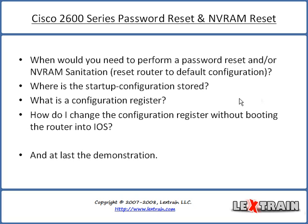I've created four key points that I want to discuss in this video: when you'll be required to perform a passive reset or a non-volatile RAM sanitation — which is basically resetting the router back to factory defaults as if you're pulling it straight out of the box — where the startup configuration is stored, what a configuration register is and what it does, and how you can change the configuration register without booting the router into Cisco IOS. And I've created a pretty cool demonstration, so let's go ahead and get started.